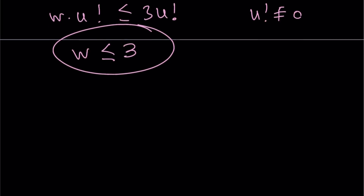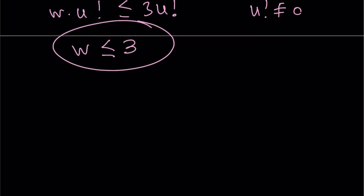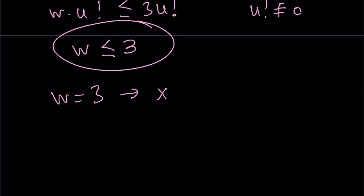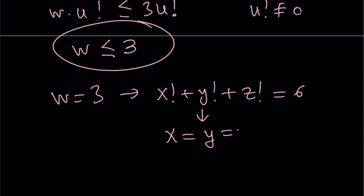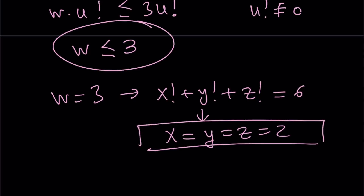Now let's look at possible values of w. If w equals three, then x factorial plus y factorial plus z factorial equals three factorial, which is six. Each of these numbers is going to be two, because two factorial equals two and two plus two plus two equals six. So we get the nice solution where x, y, z are all equal to two.